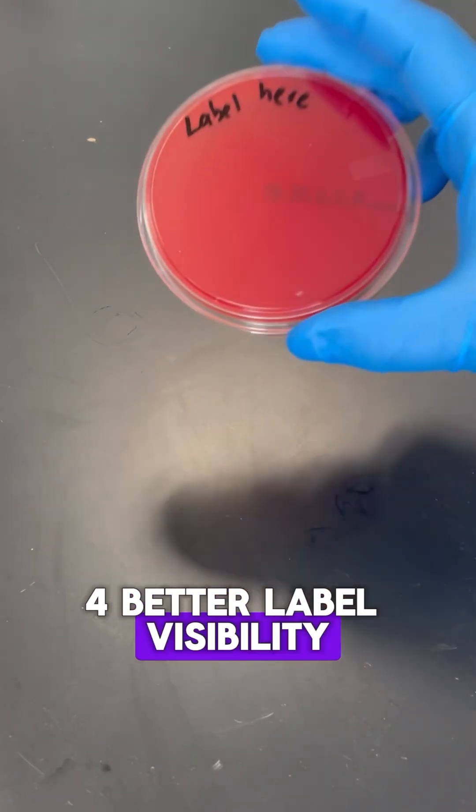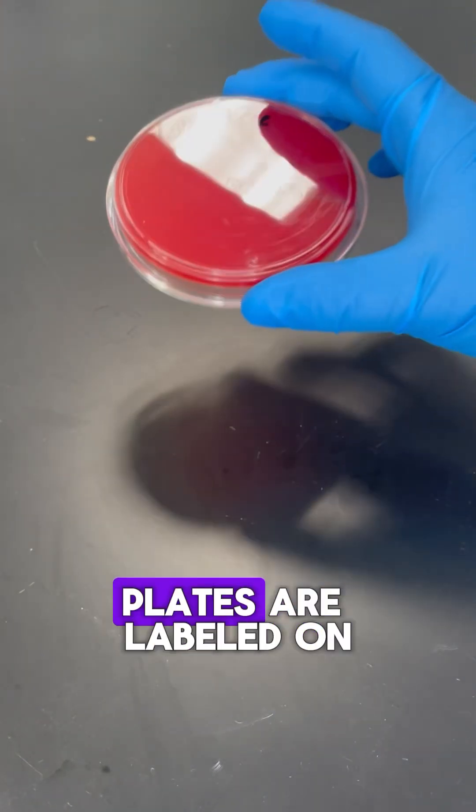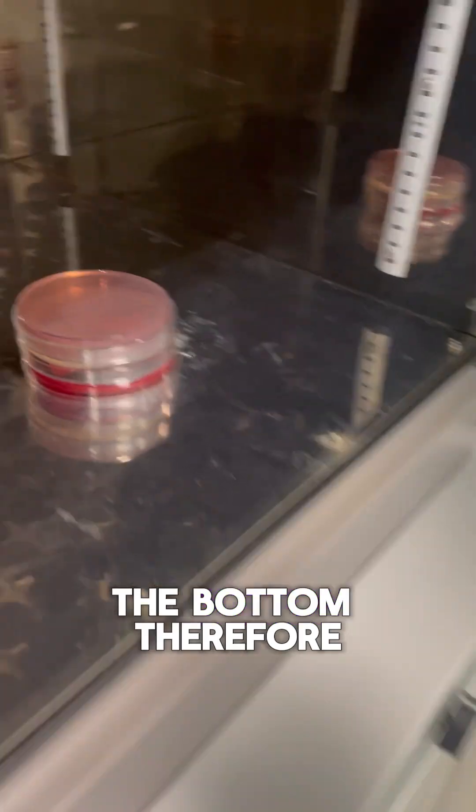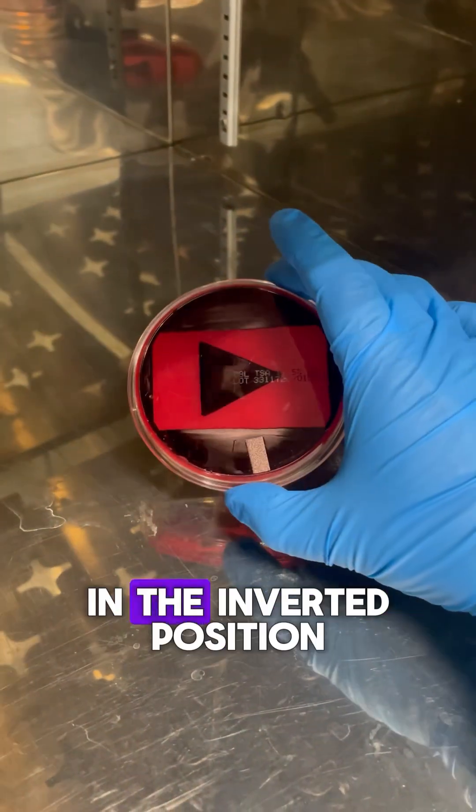4. Better label visibility. Because the agar doesn't move, plates are labeled on the agar side, the bottom. Therefore, labels are more visible in the inverted position.